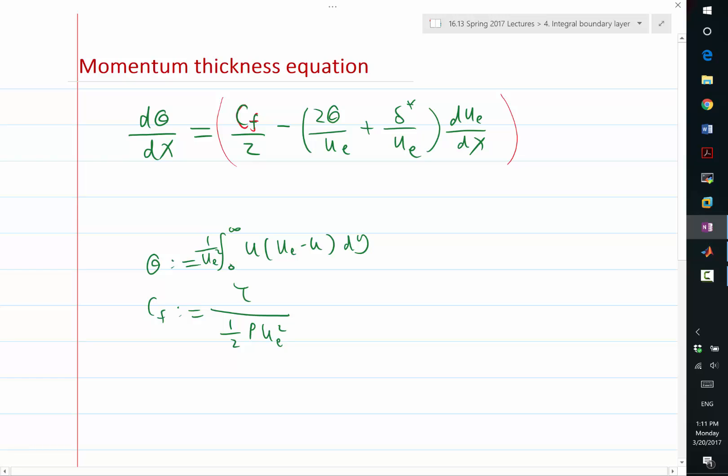So CF is the first term that I don't know. So CF is something I am going to need to model. Theta is something I already know, so I'm fine. ue is a function of x. So we are supposing ue as a function of x is given here. So if I'm given x, I know what ue is. So this term is completely known.